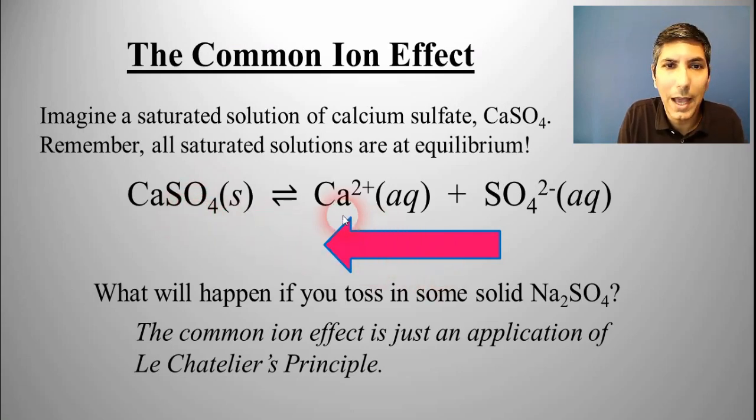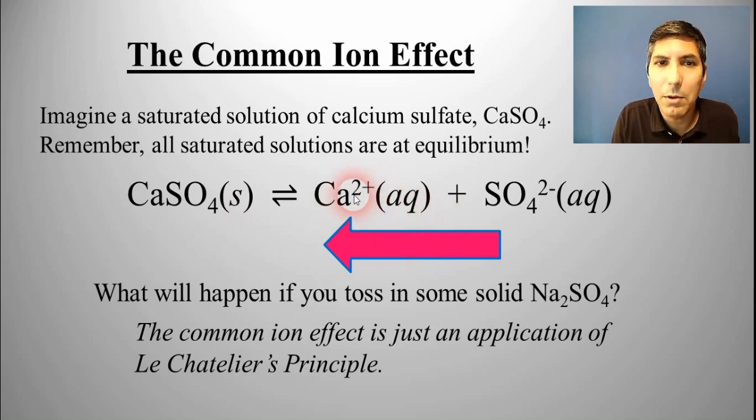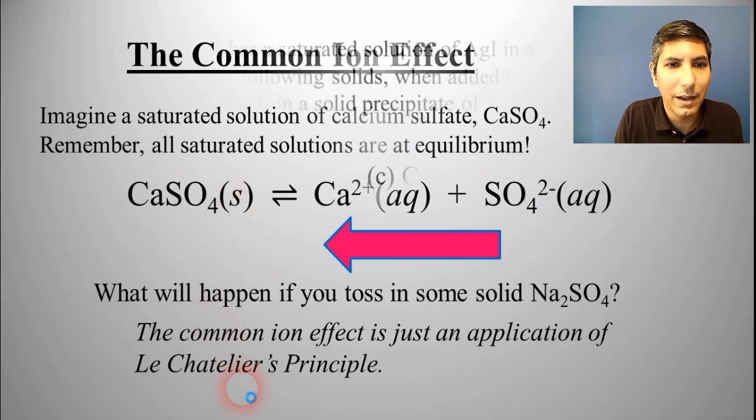and we're going to create some calcium sulfate precipitate. So this would have worked if you had added in some calcium ions as well, maybe some calcium chloride or something. Anytime you're adding a product ion here, it's going to shift it to the left when you're at equilibrium, and you're going to make the solid. That's the common ion effect.